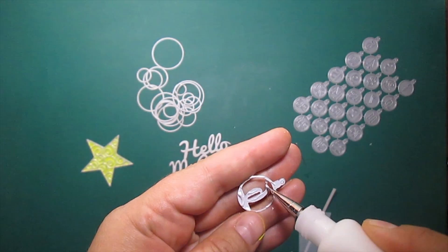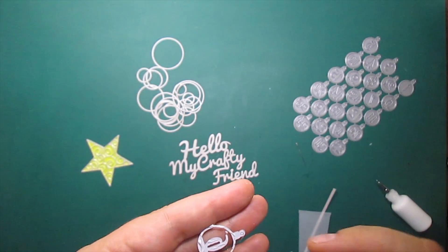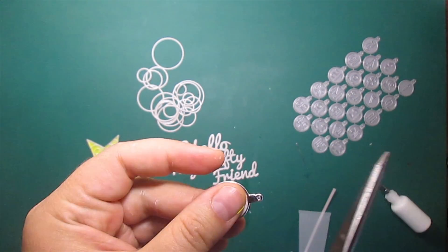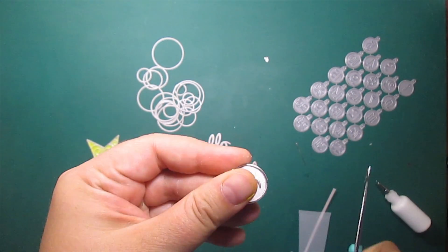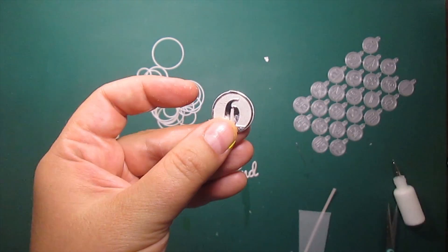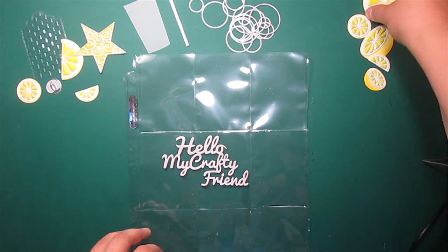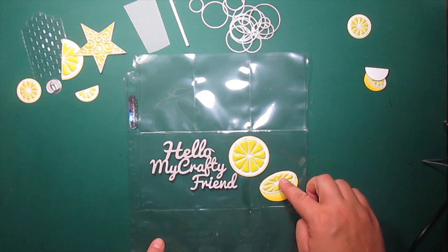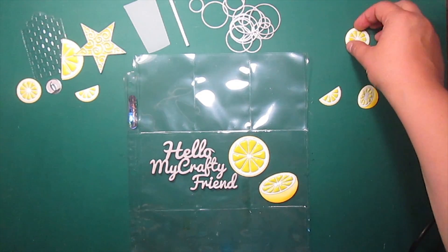As always I'm using Advent Calendar die set to make a number plate. This pocket letter is number six. I'm arranging some of the elements on top of a page and then I'm going to stick them down with hot glue.